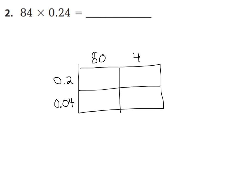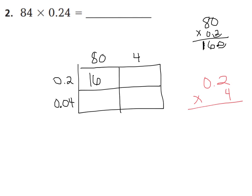Now we can find our partial products. Let's start with 80 times 2 tenths: 2 times 0 is 0, 2 times 8 is 16. We have one place value in our decimal to the tenths place, so we put a decimal right there — that gives us 16 wholes. So 80 groups of 2 tenths equals 16 wholes. Now let's do 2 tenths times 4 wholes: 4 times 2 is 8, and 4 times 0 is 0. We have one decimal place, so that's 8 tenths.